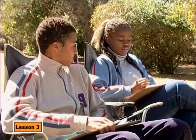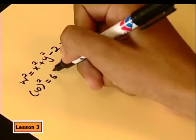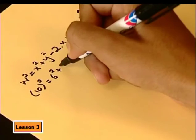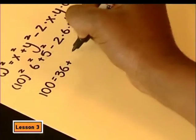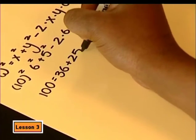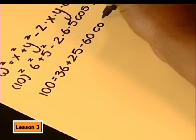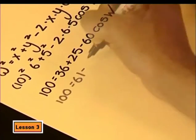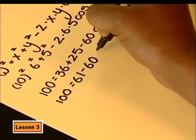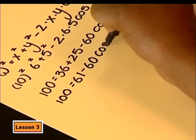Suits me. So W is 10, X is 6 and Y is 5. Let's see. That's 100 equals 36 plus 25 minus 60. And we leave cos W as it is. So 100 equals 61 minus 60 cos W.